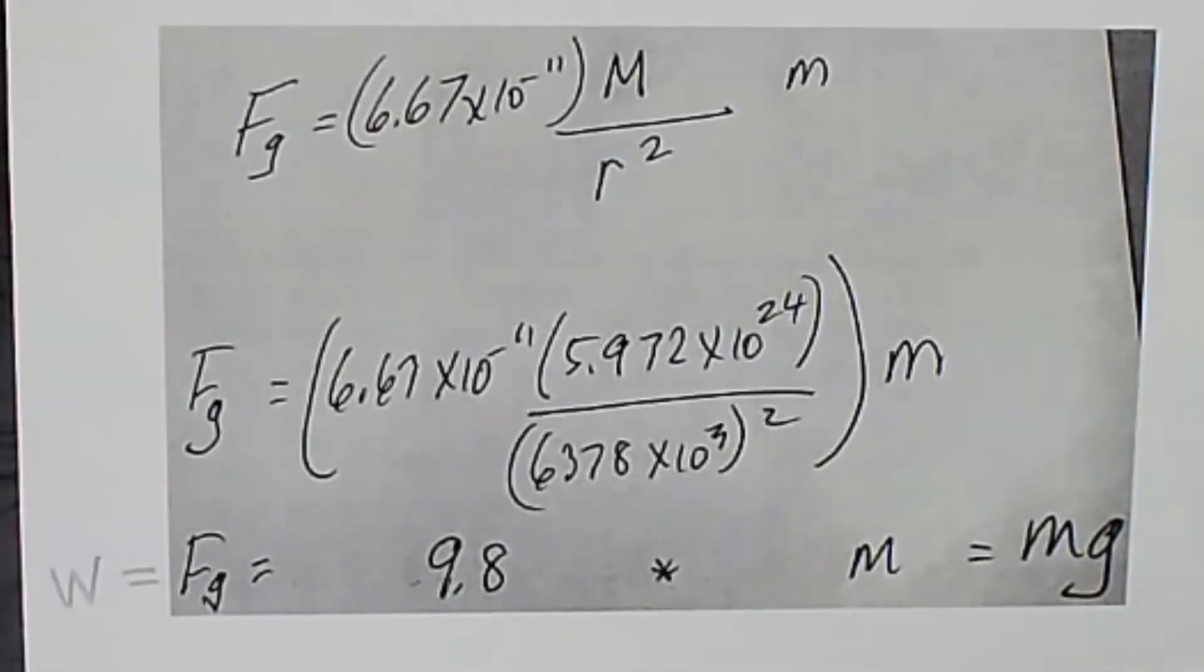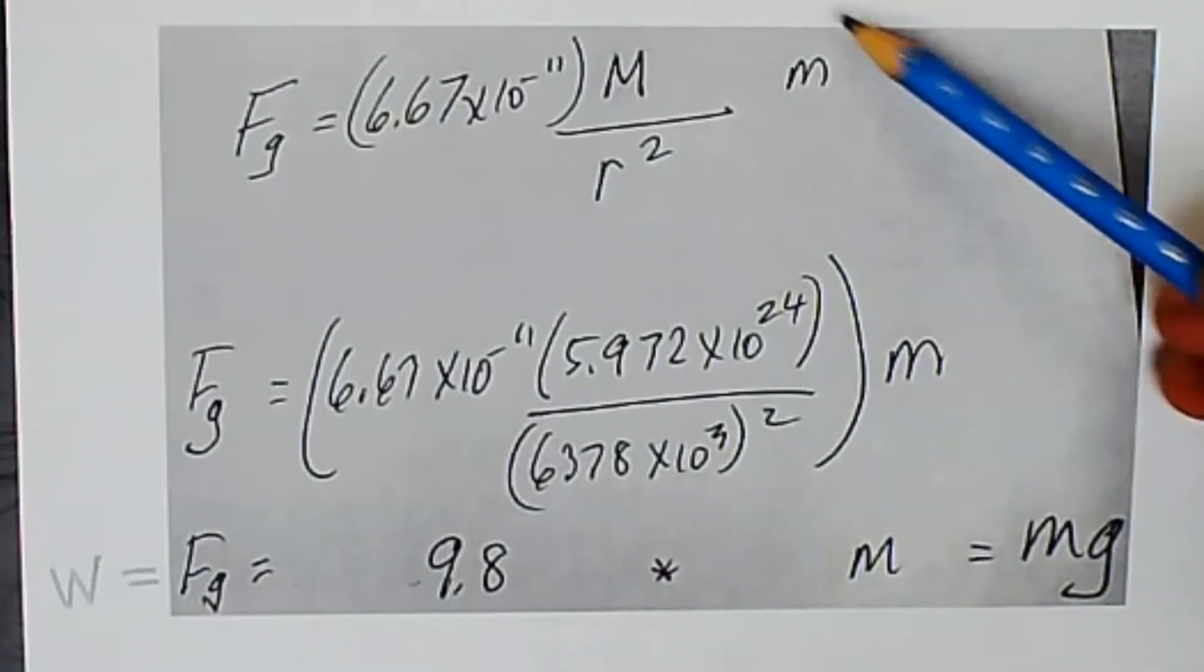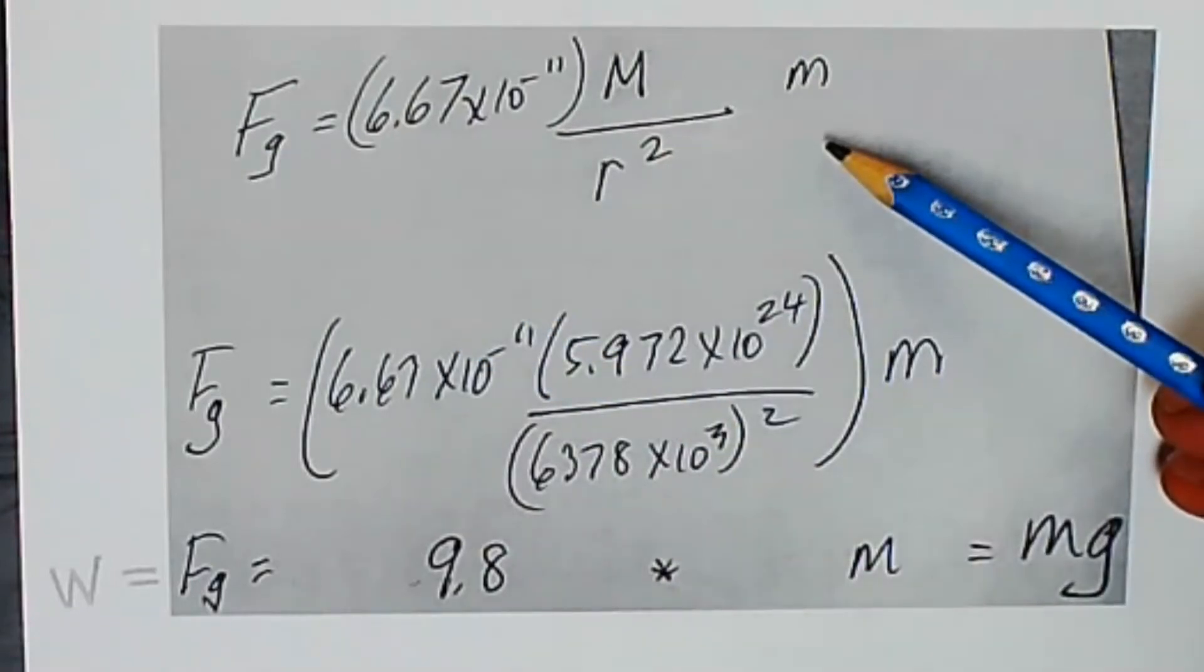In lesson 13.2 on Newton's Universal Law of Gravitation, we showed that the equation for our weight, which we know is mass times gravity, is really just a simplification of Newton's Universal Law of Gravitation.